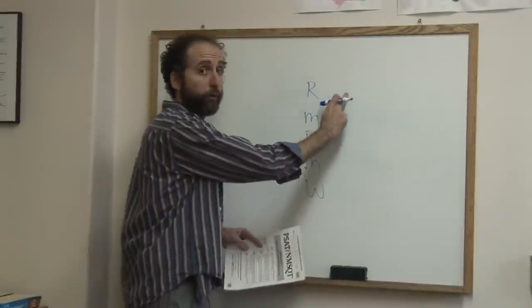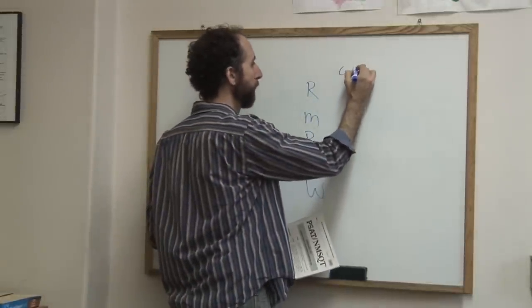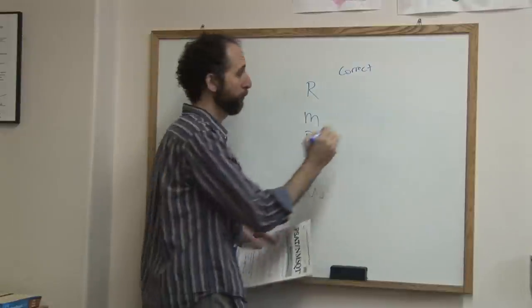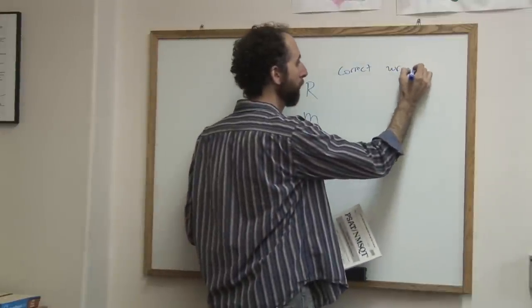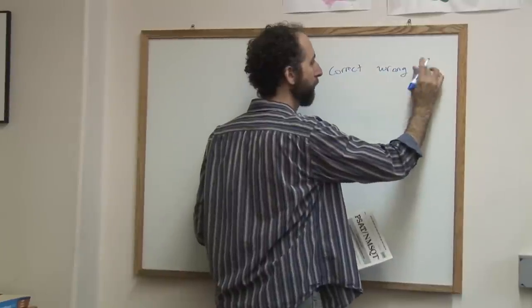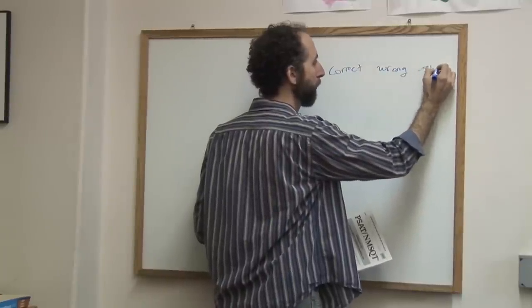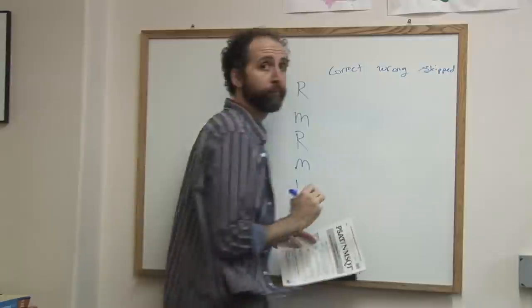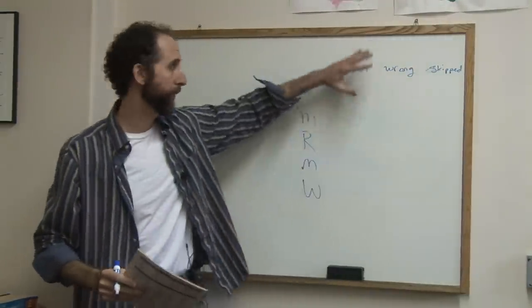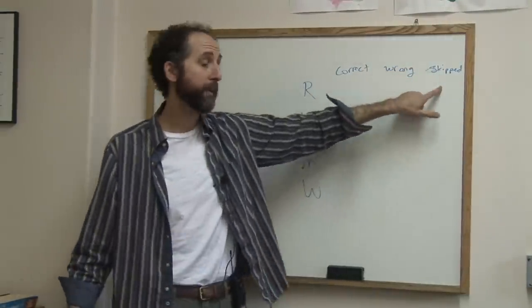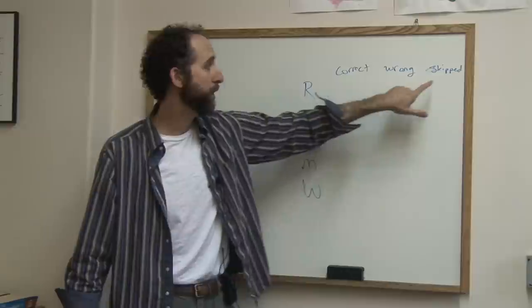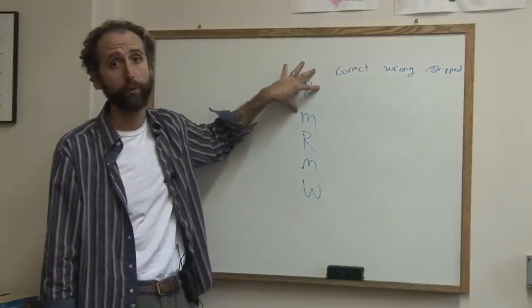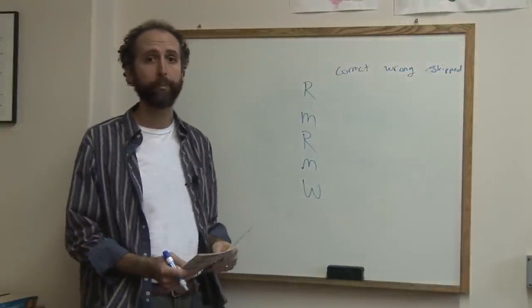You're going to score it by finding out how many you got correct, how many you got wrong, and how many you omitted or skipped. Now, how many you skipped doesn't matter in our addition process, but it's not a bad idea to make that column because these three numbers should add up to how many questions there were, just to make sure you didn't make a careless error.